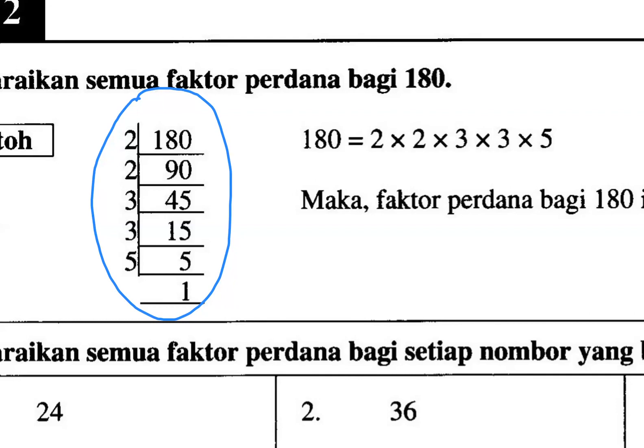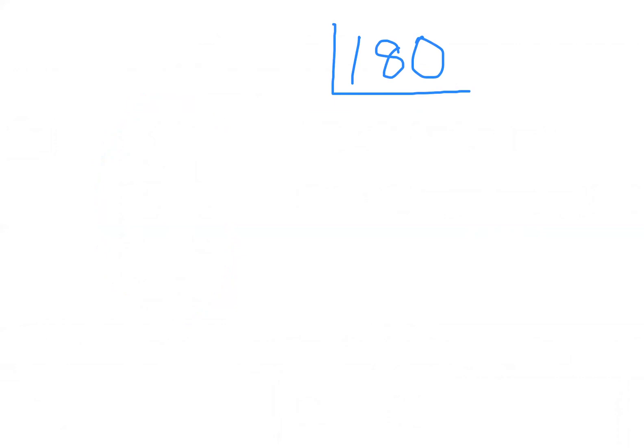Secara example, I give you one example here — 180. I need to divide it by 2. Help me to find what is 180 divided by 2. Jawapan akan turun ke bawah. So 180 bahagi dua dapat 90. Again, kita nak divide dengan berapa — 90 boleh bagi dengan berapa? You can divide it again by 2. So 90 bahagi dua dapat 45.